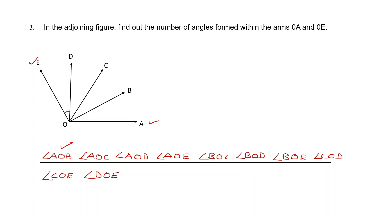So how many angles have been formed between the arms OA and OE? Let's count: one, two, three, four, five, six, seven, eight, nine, and ten angles have been formed. We have got ten angles between the arms OA and OE.